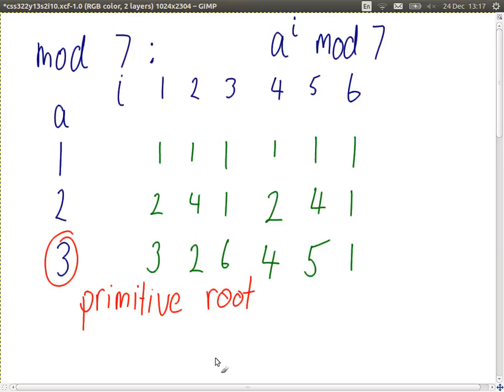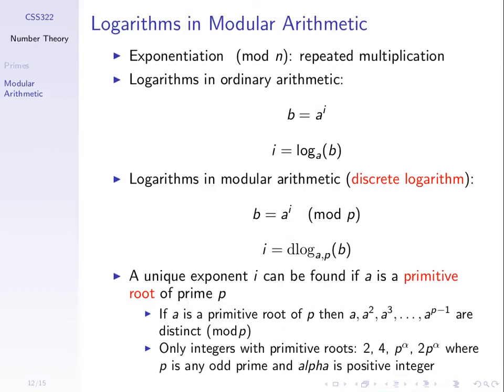That's the definition of a primitive root. We use it to work out when a discrete logarithm is possible. The idea of a discrete logarithm is: given the base and the answer, find the index such that when we raise the base to that index, we get the answer b — same as a regular logarithm, but everything is mod p. With some base a, if we mod p and get the answer b, what is the index i? We can only solve such a problem and get a unique exponent i if a, the base, is a primitive root of prime p. That's the condition when our discrete logarithm will work.